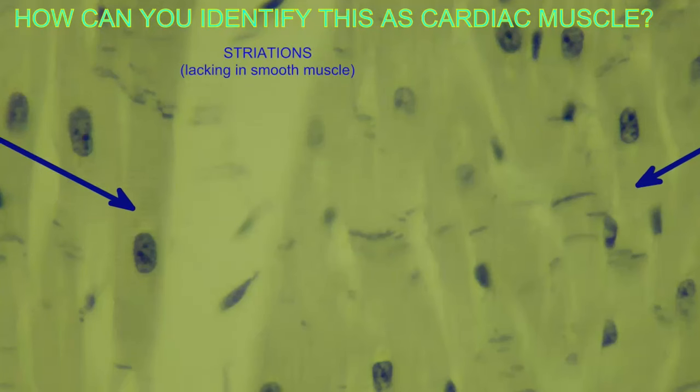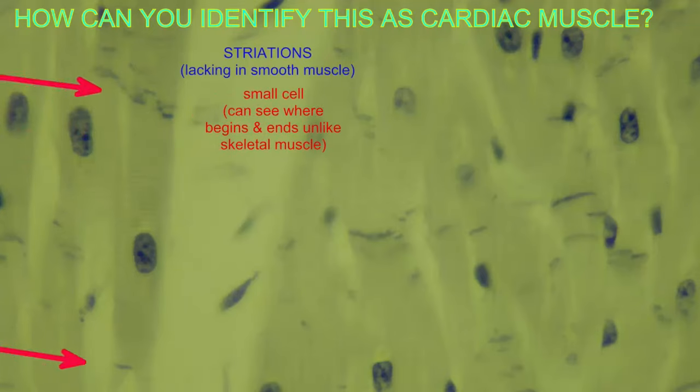Cardiac muscle is one of three types of muscle in the body, and it is only found in the heart. It can be identified as a striated muscle.